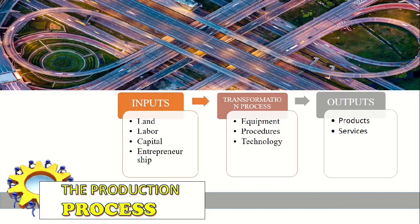Next is the production process, which goes from inputs to transformation process and outputs. Inputs include land, labor, capital, and entrepreneurship. With these inputs, you can proceed to the transformation process which includes equipment, procedures, and technology. In the transformation process, human resources operate and control the equipment and technology, as well as perform procedures, enabling the production of outputs — products and services.